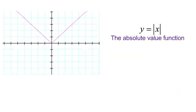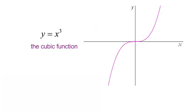I'm not going to graph the absolute value function, but this is a picture of y equals the absolute value of x. Our last parent function is the cubic function: y equals x to the third. To graph it, plug in several values for x, cube them, and find your matching y.